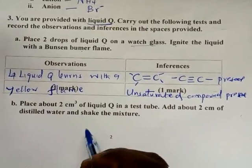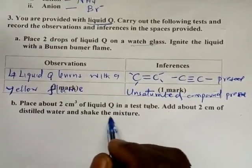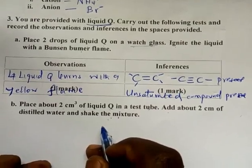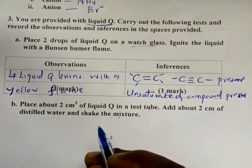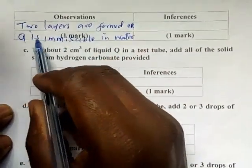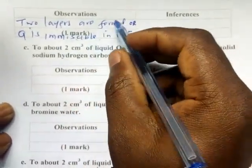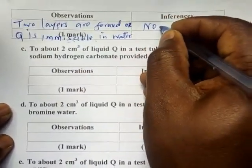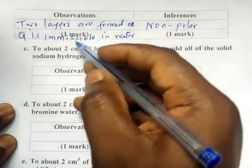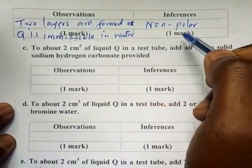Place about 2 cm³ of liquid Q in a test tube, add about 2 cm³ of distilled water, and shake. Here we want to see whether the liquids are miscible or immiscible — whether they form one layer or two layers. The observation is that two layers are formed, meaning Q is immiscible with water. If it forms two layers, it is nonpolar; if it forms one layer, it is a polar organic compound.